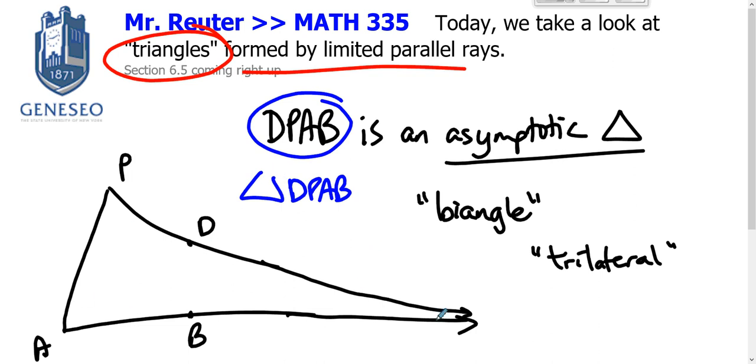This is called an asymptotic triangle because it's formed by two limiting parallel rays and the segment between their endpoints. There are a couple of things you should know about this.